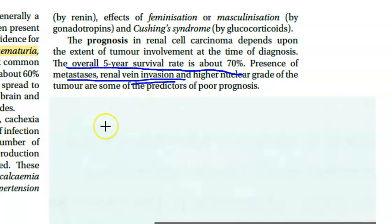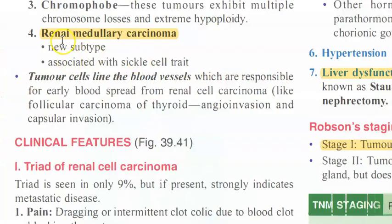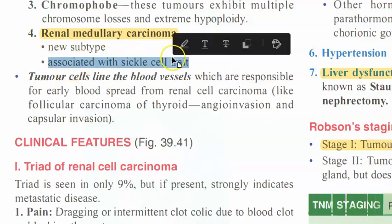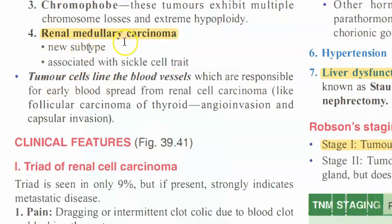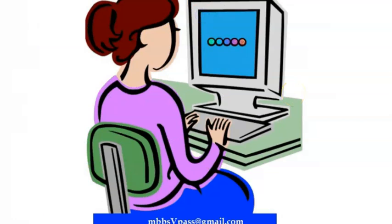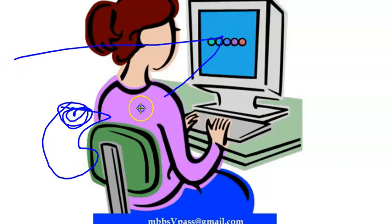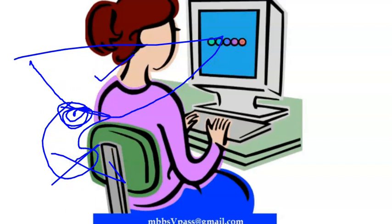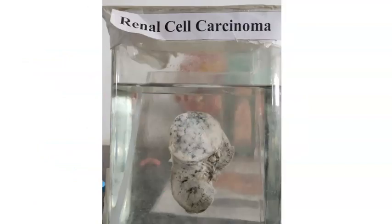High-grade tumors also have poorer prognosis. A new subtype is renal medullary carcinoma, which is associated with sickle cell trait. Renal cell carcinoma can also cause liver problems, but once nephrectomy is performed and the kidney is removed, the liver can recover.